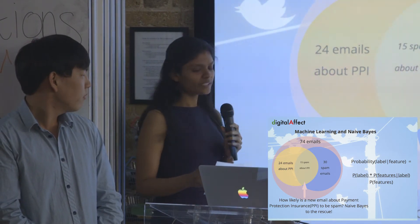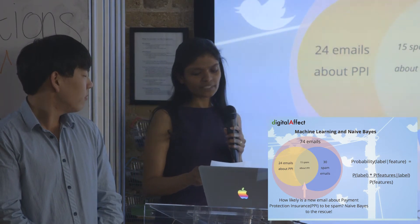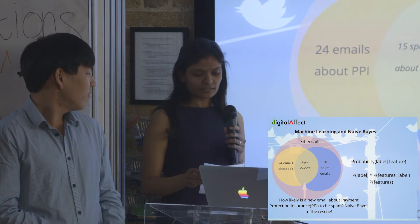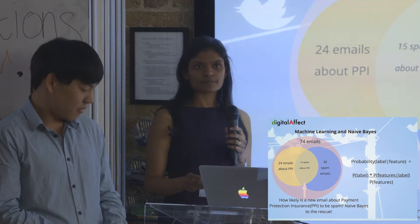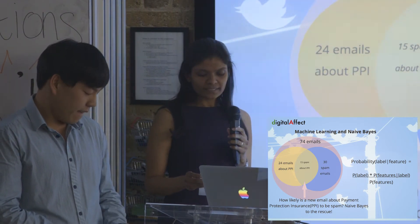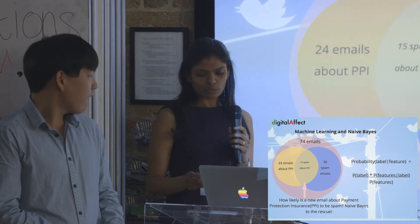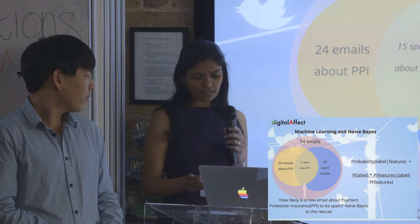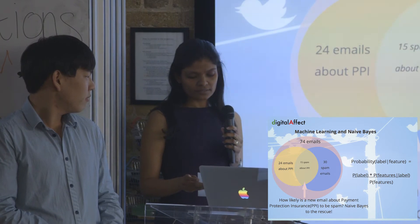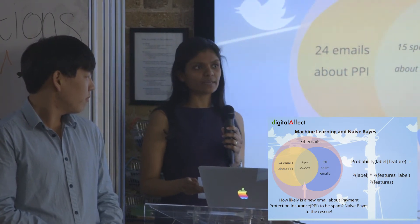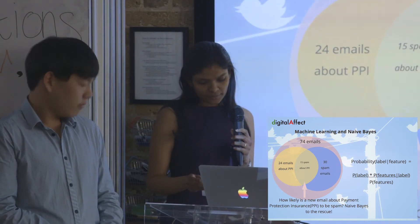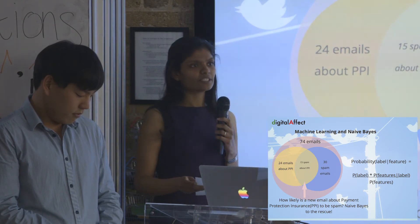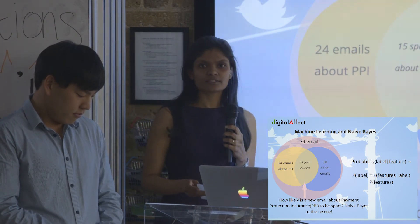Let's say we are looking at an email with PPI mentioned in it. When it receives this email, it first calculates the likelihood of receiving a spam email. It then calculates the probability of a spam email containing PPI text. Depending on the calculations, it concludes whether a mail is spam or not. If you'd like to know more, please feel free to contact any of us after this presentation.